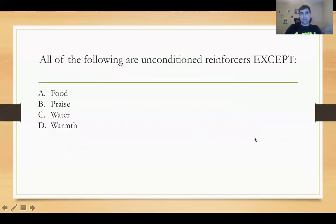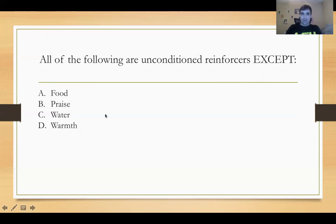Easy question: all of the following are unconditioned reinforcers except — food, praise, water, warmth. What is the only secondary reinforcer here? What is the only thing that needs to be learned? That, of course, is praise.